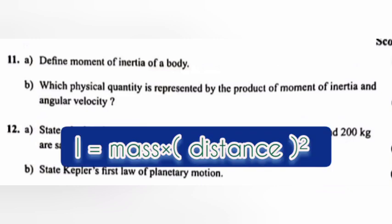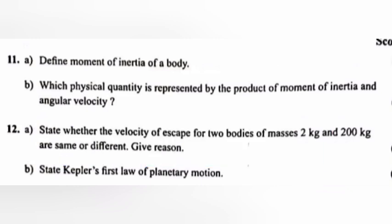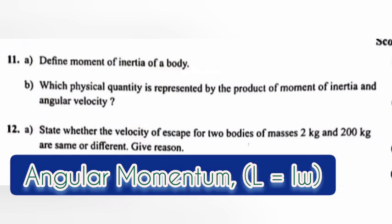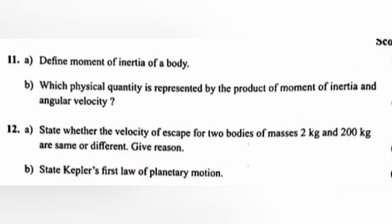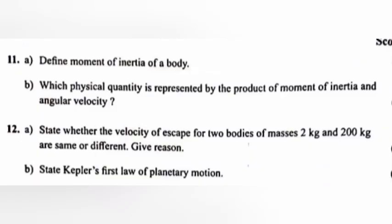Question 12a: State whether the velocity of escape for two bodies of masses 2 kg and 200 kg are same or different. Give reason. Answer: Same. Velocity is independent of mass of projecting body. Question 12b: State Kepler's first law of planetary motion.